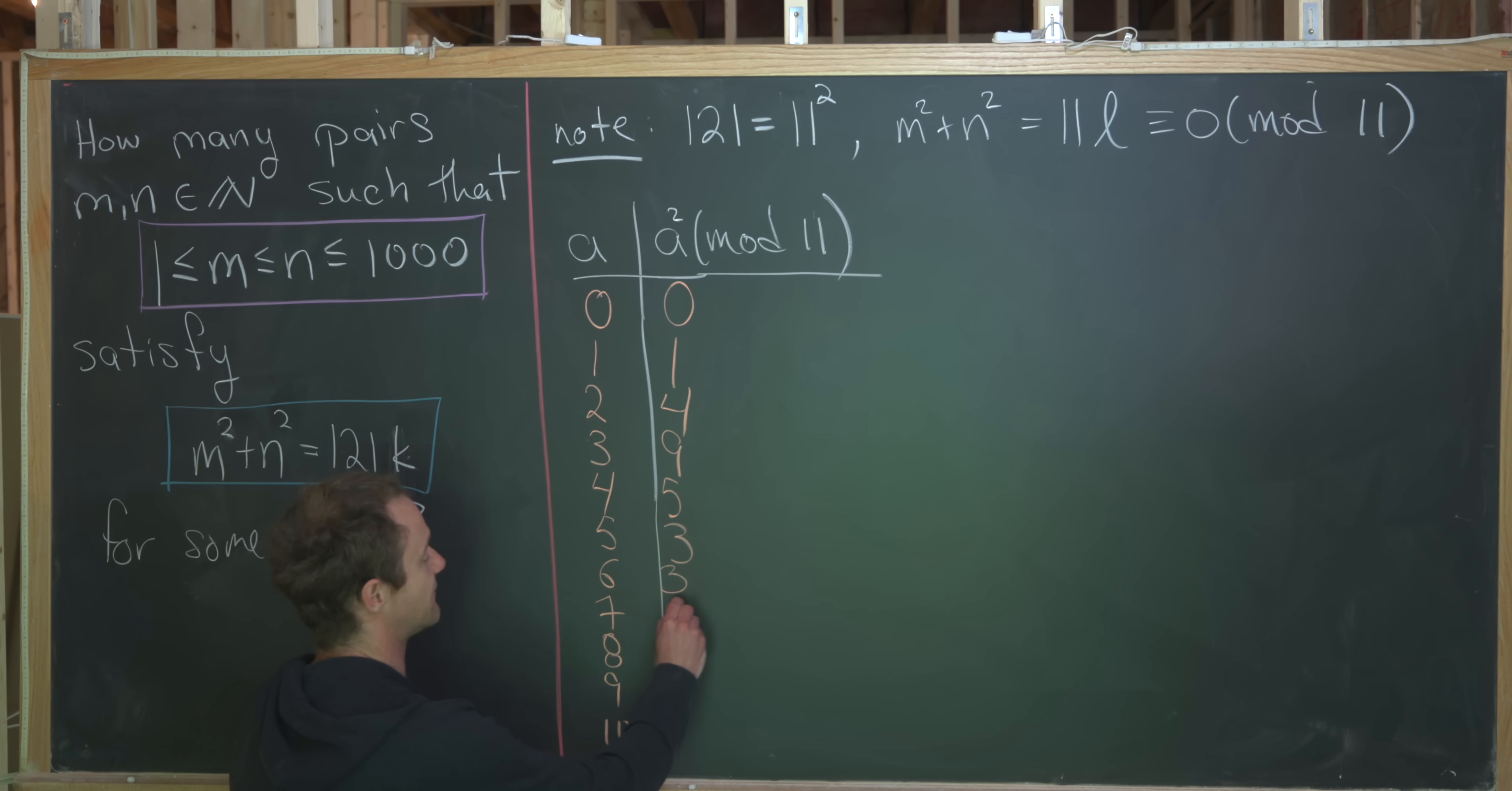And in fact, you can check that we'll get 5, 9, 4, 1 going down this way. Noticing this, we see that the only perfect squares are 0, 1, 4, 9, 5, and 3.